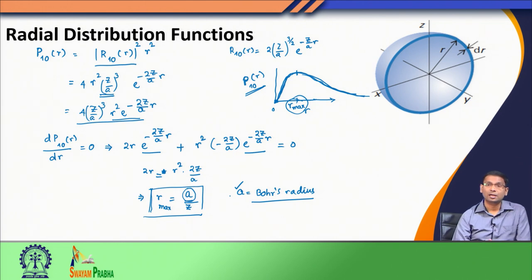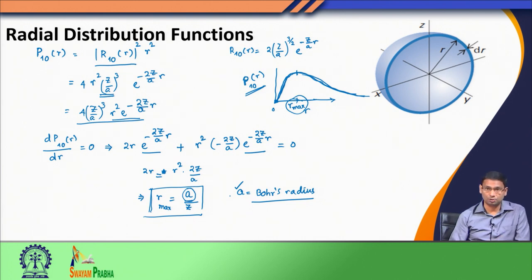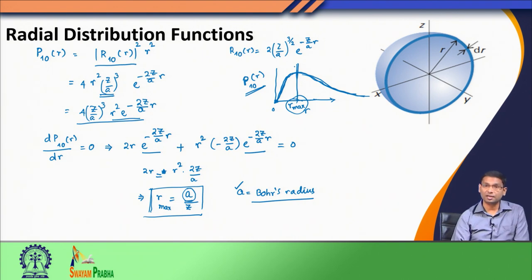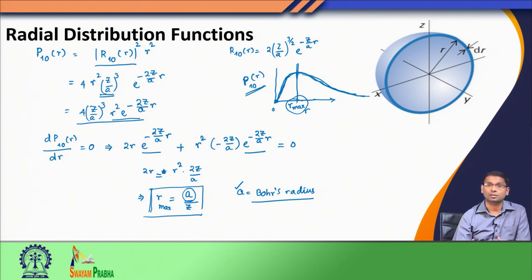Interestingly, this Bohr radius was defined by Bohr in his atomic model, and our a and Bohr's radius are exactly the same. While Bohr's atomic model said the electron moves around a fixed orbit with a radius equal to Bohr's radius, quantum mechanical formulation says the electron moves around the nucleus with maximum probability at Bohr's length from the nucleus, but we also have finite probability for the electron to be found elsewhere. Bohr's simple model gave only this one result, whereas quantum mechanics gives the full distribution. This represents the uncertainty in the location of the electron, which was absent in Bohr's atomic model.